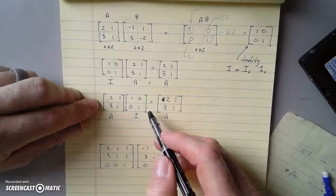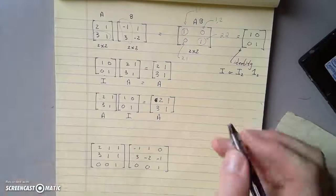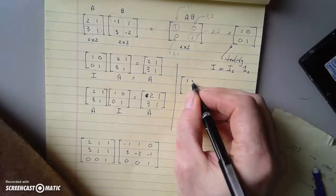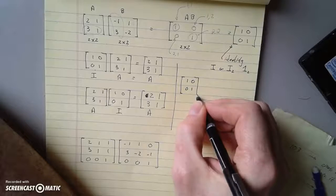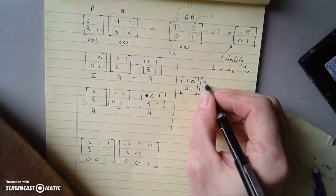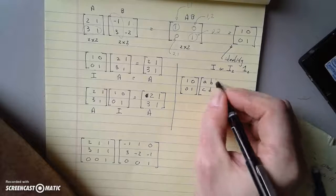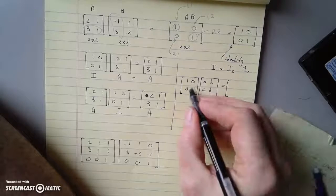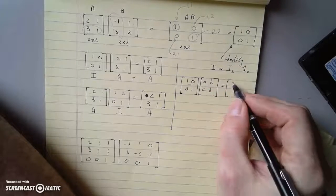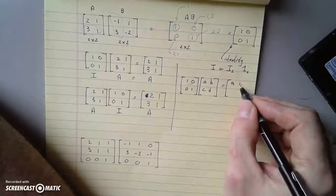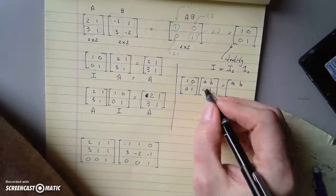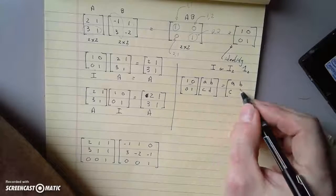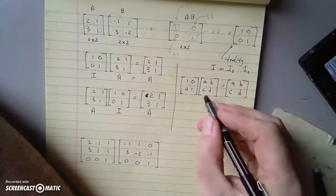Is this a coincidence? Is it just working out? Well, here we can test it. What if I took 1, 0, 0, 1 times an arbitrary matrix A, B, C, D? What would I get? First row, first column, I get A. First row, second column, I get B. Second row, first column, I get C. Second row, second column, I get D. It's the same thing.